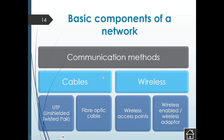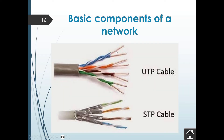A network connection can be made with cables. Cable types include UTP — Unshielded Twisted Pair — and STP — Shielded Twisted Pair. There's also fiber optic cable. Under wireless you have wireless access points and wireless adapters. So you can communicate with a network via cables or wirelessly. An Unshielded Twisted Pair cable, as the name implies, is a twisted pair of cables with no shielding.